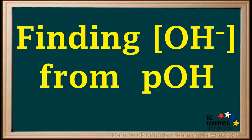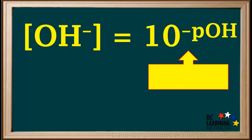Now we'll go over how to find the hydroxide ion concentration of a solution if we're given the pOH. To do this, we use the formula: concentration of hydroxide equals 10 to the negative pOH. 10 to the negative pOH is called the anti-log of the negative pOH. When you're doing this calculation, make sure you use the negative of the pOH value rather than the pOH value itself.